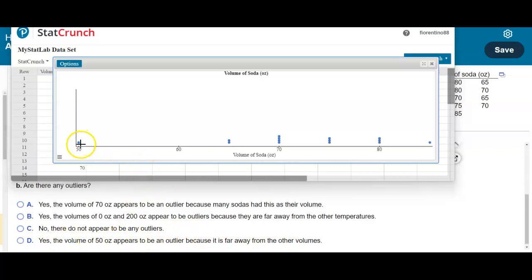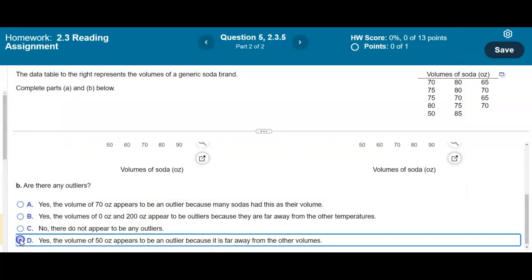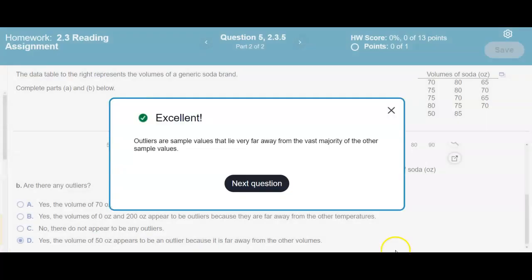So when you look at 50, it is farther away from all of our dots here. So we would say that yes, the volume of 50 ounce appears to be an outlier because it is far away from the other volumes. So we would select D and there is our answer. Okay.